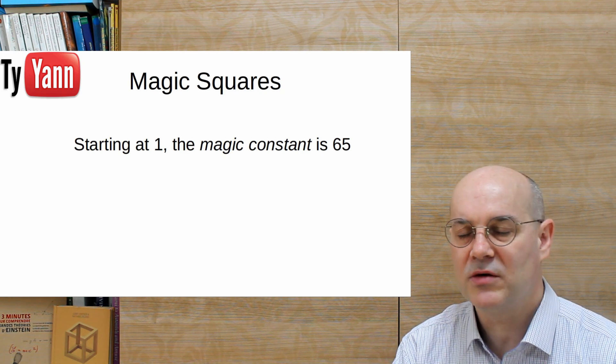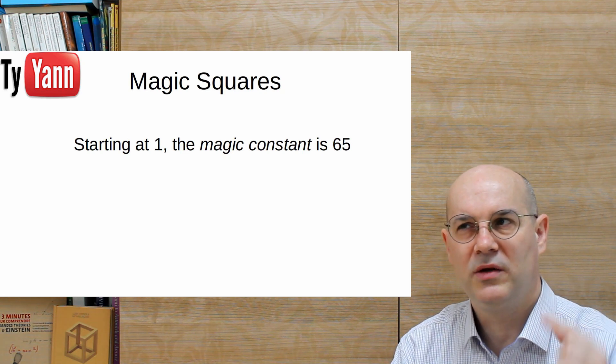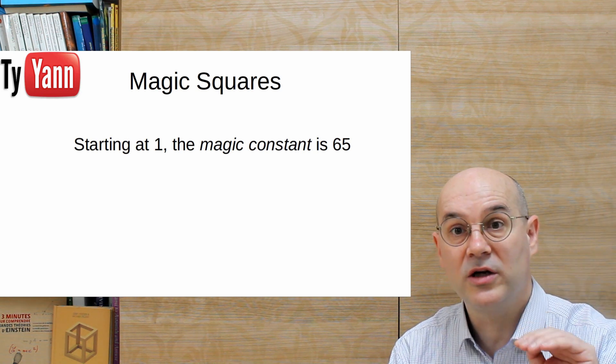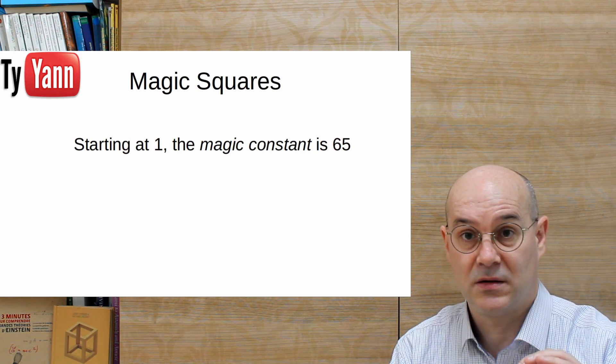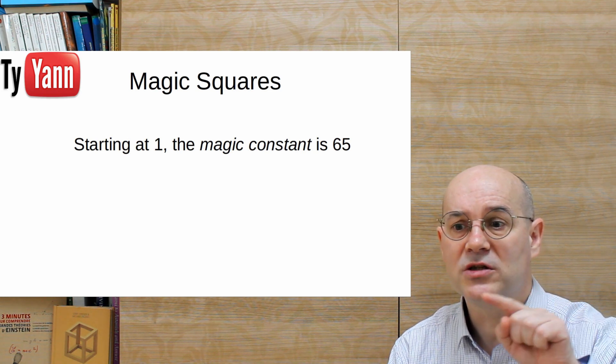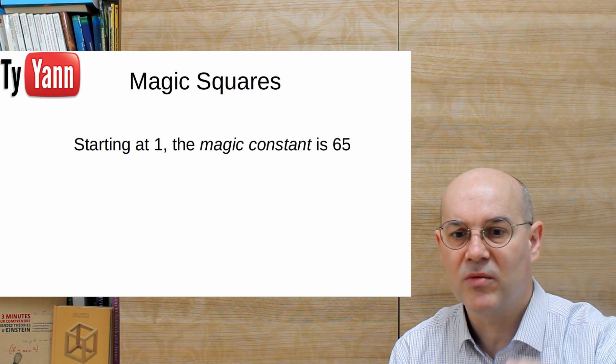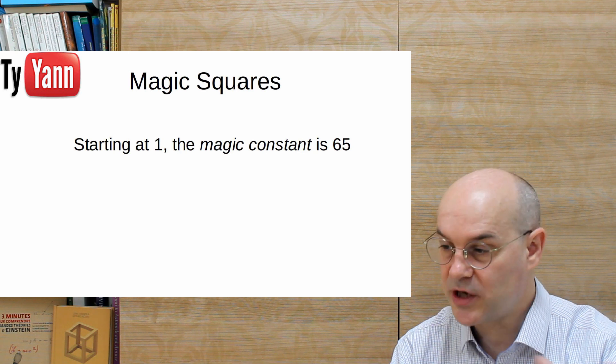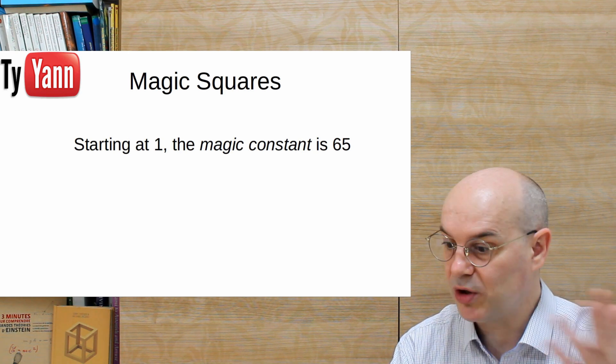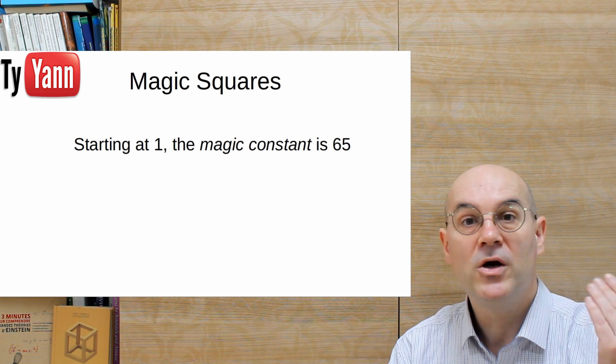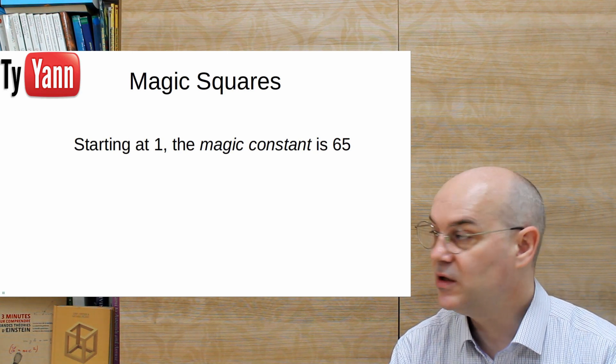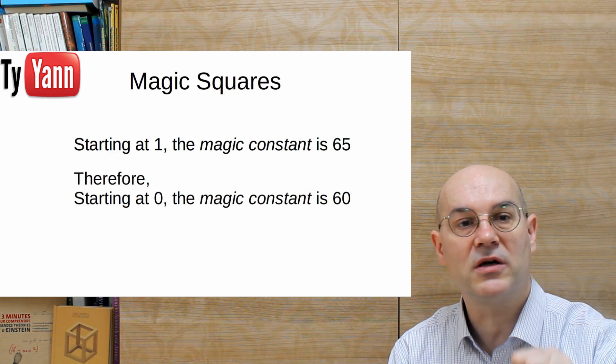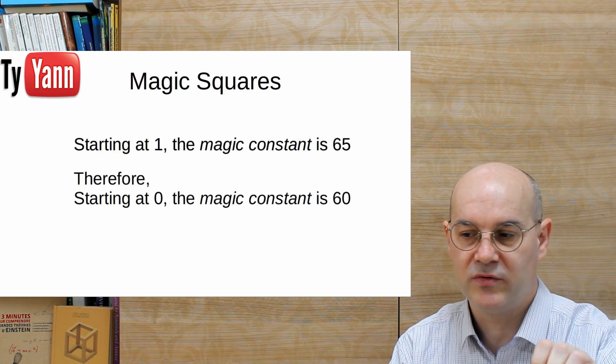What happens? Well, if we start at zero, that means all the numbers in the grid are going to be one less. So for each column, each row, there's going to be five numbers, one less, so I mean minus five for each column and each row, and each diagonal, and each of these symbols, multiply, plus, whatever. So it means that if we start at zero, the magic constant will be 60. That's going to be our mark, our starting point, 60, when we start at zero.